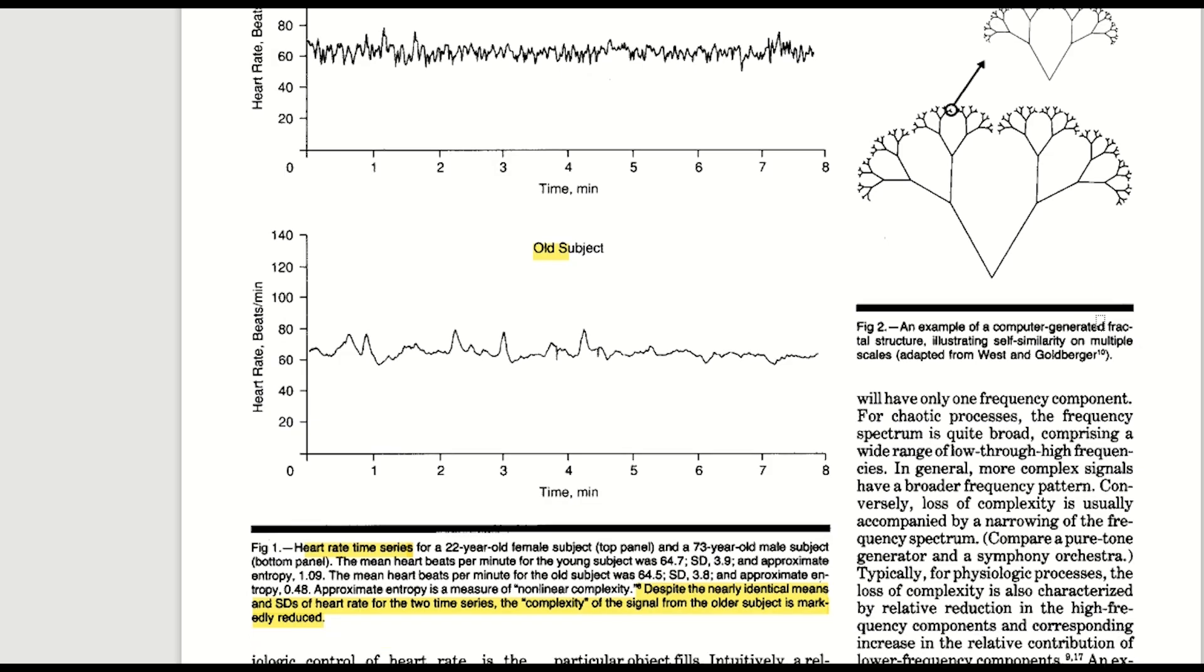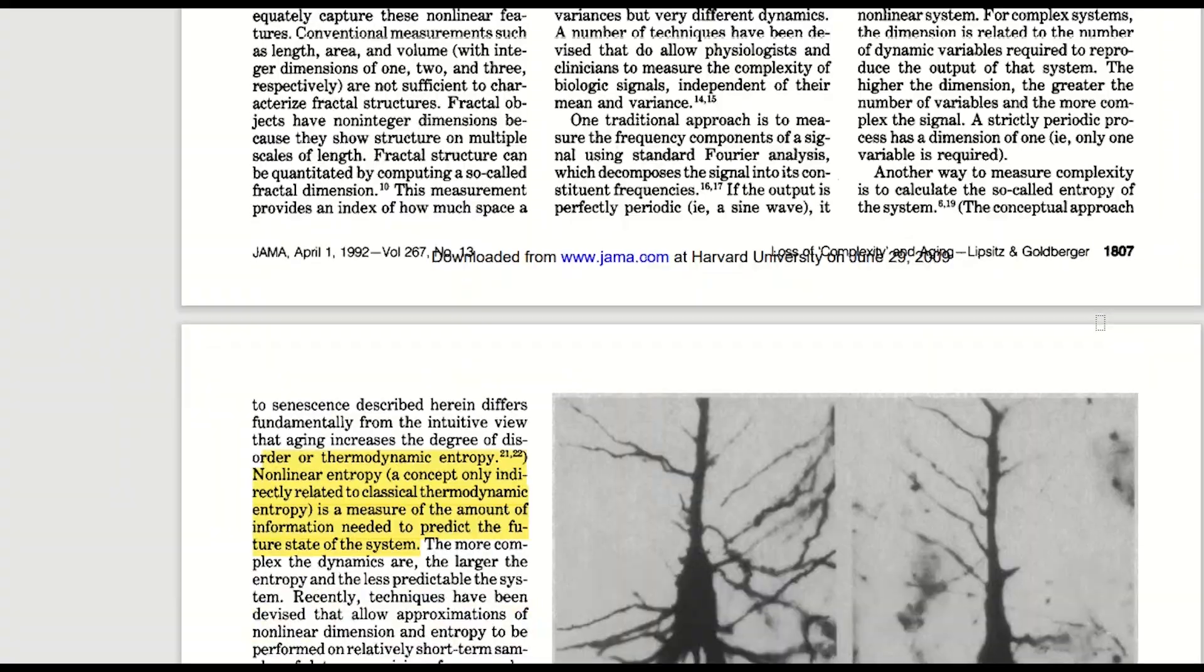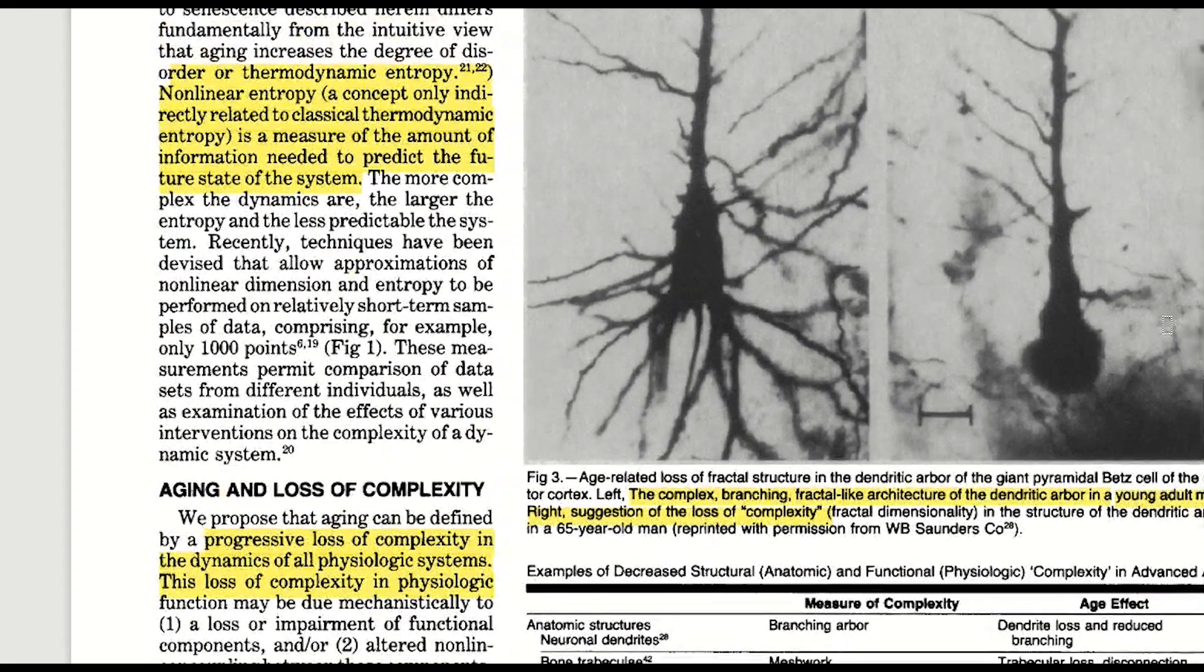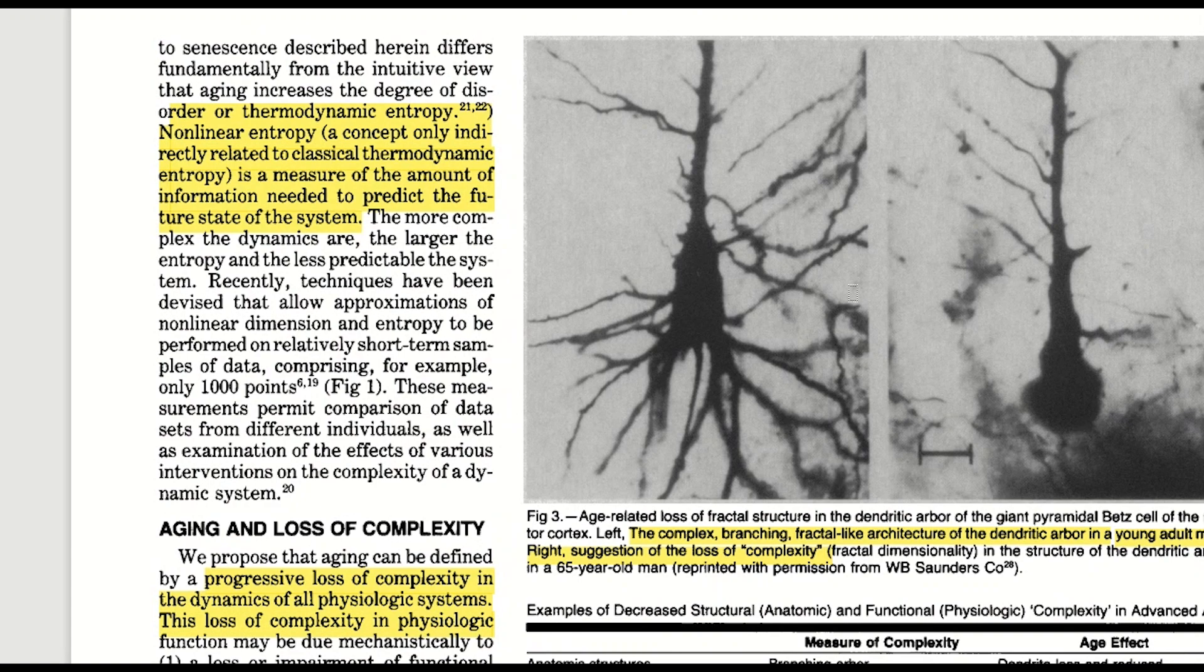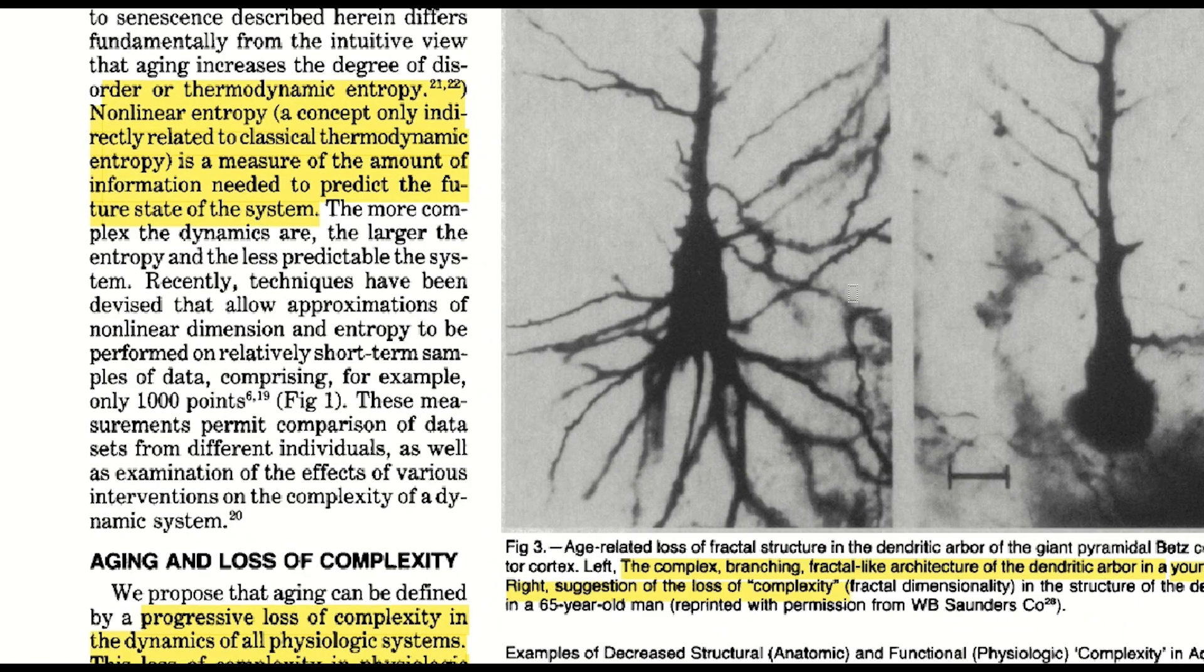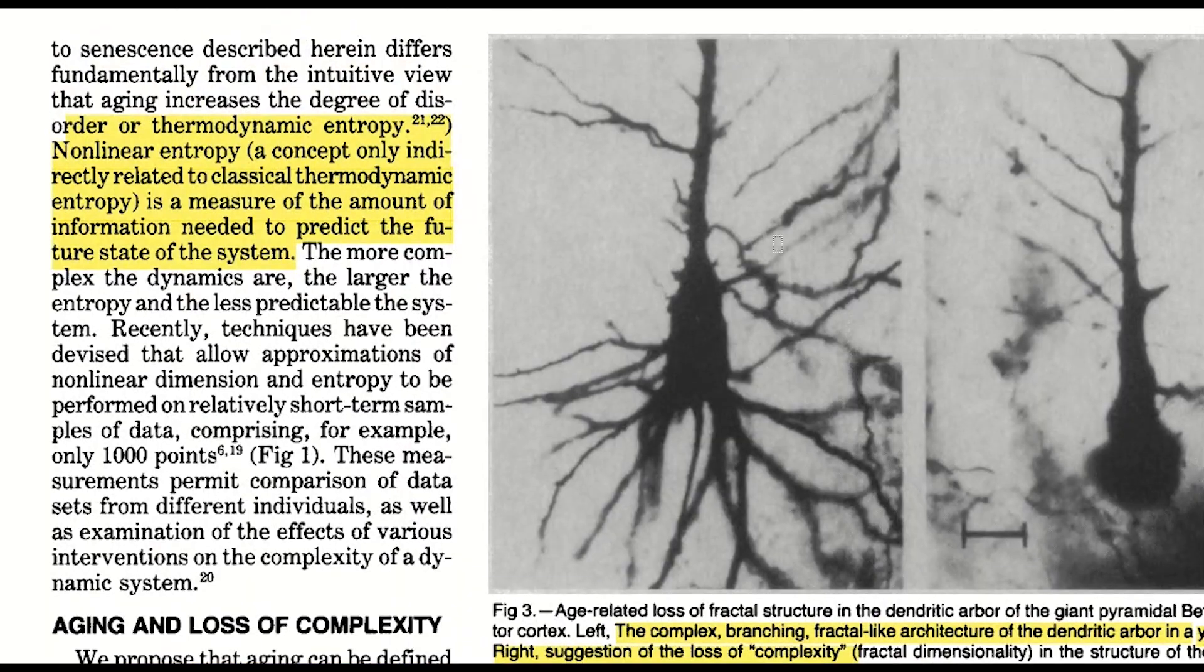An example of the loss of anatomic complexity with age shown in this paper is that of neuronal dendrites. Here, the branching of the dendrites is a measure of fractal-like complexity, and the age effect is a loss of dendrites and reduced branching.